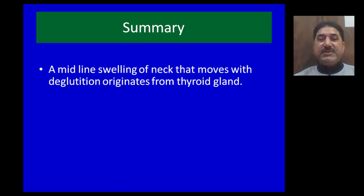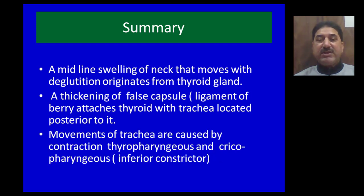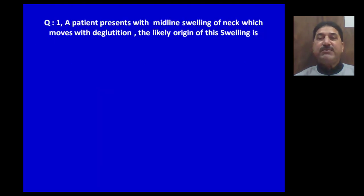To summarize: a midline swelling of the neck that moves with deglutition originates from the thyroid gland. A thickening of the false capsule of the thyroid gland called the ligament of Berry attaches the thyroid to the trachea, located posterior to the thyroid gland. Movements of the trachea are caused by contraction of thyropharyngeus and cricopharyngeus, which are parts of the inferior constrictor muscle of the pharynx.